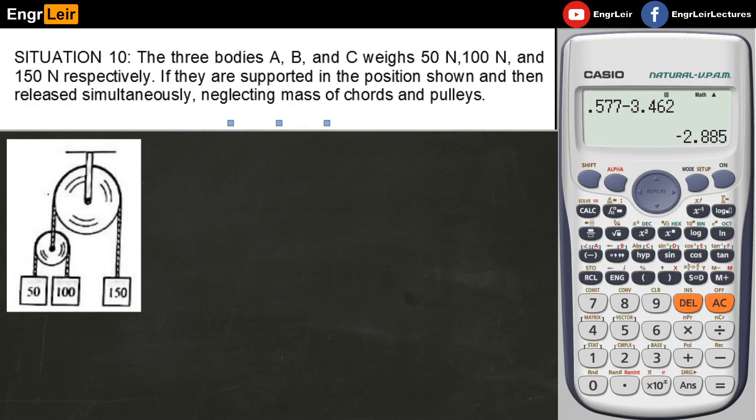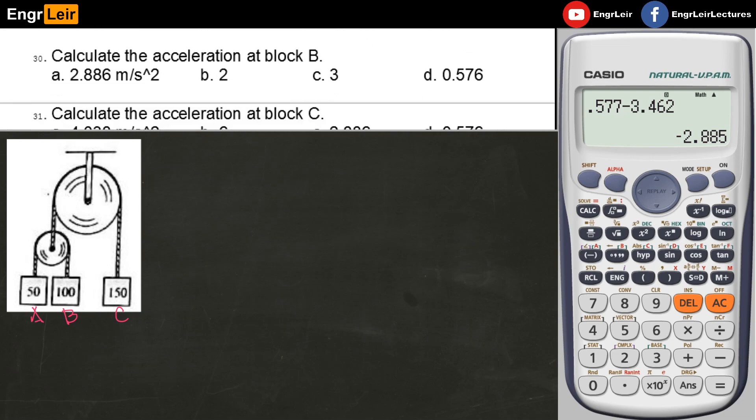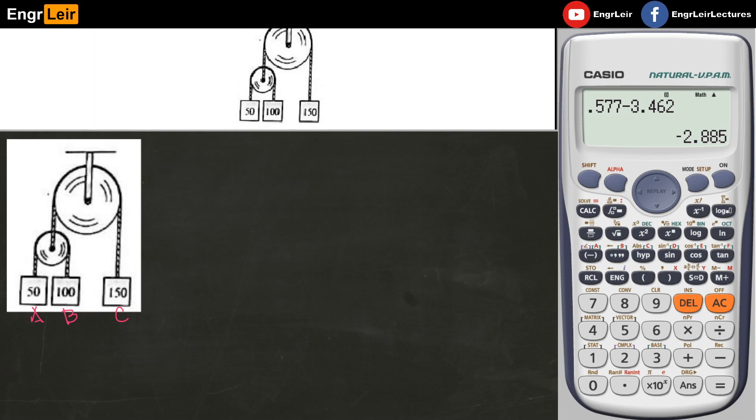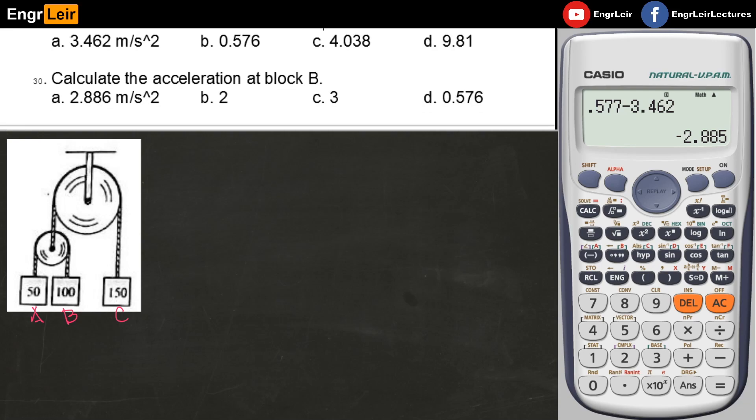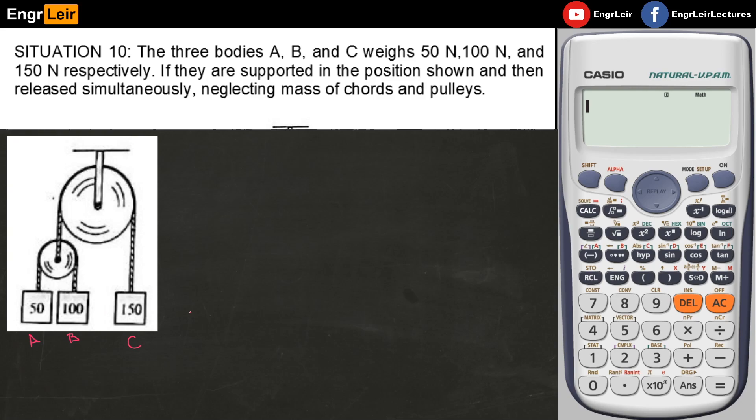For Situation 10, we have 3 bodies A, B, and C with given weights. Block A is 50 N, block B is 100 N, and block C is 150 N. We neglect the mass of the pulley and cord. What we're looking for are the acceleration of block A, acceleration of block B, and acceleration of block C when the system is released and begins to move.